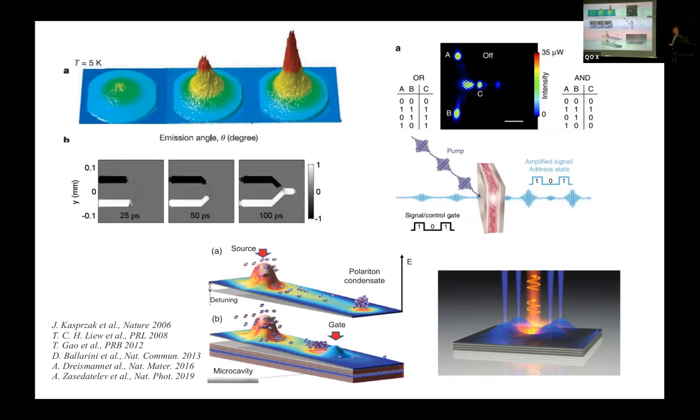Exciton polaritons were used to demonstrate a number of very nice phenomena, in particular condensation, non-equilibrium condensation of bosons, even at room temperature, but also were used to construct devices such as transistors, both in cryogenic temperature and at room temperature, polaritonic spin switches, and so on.